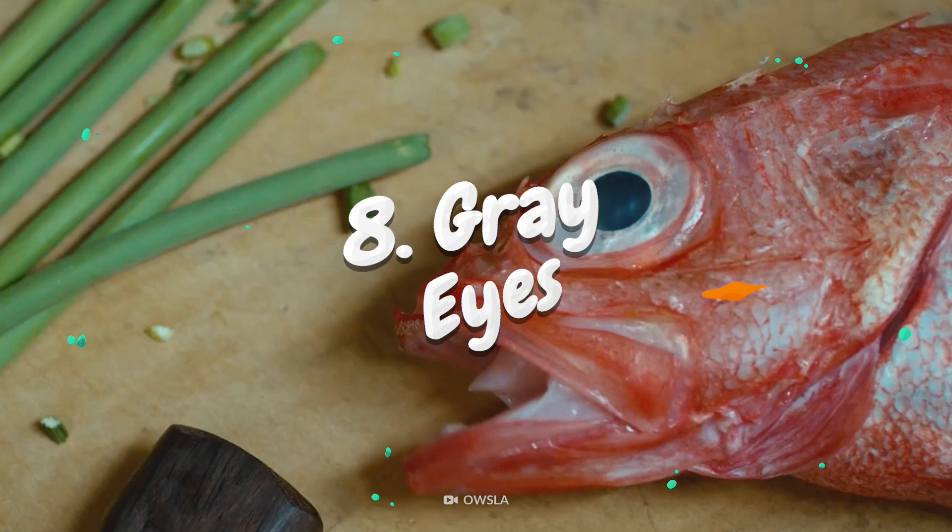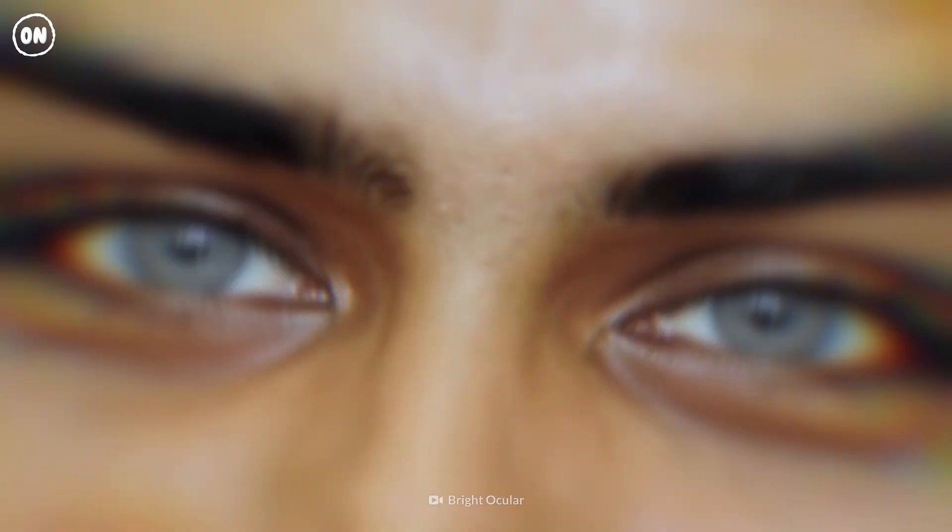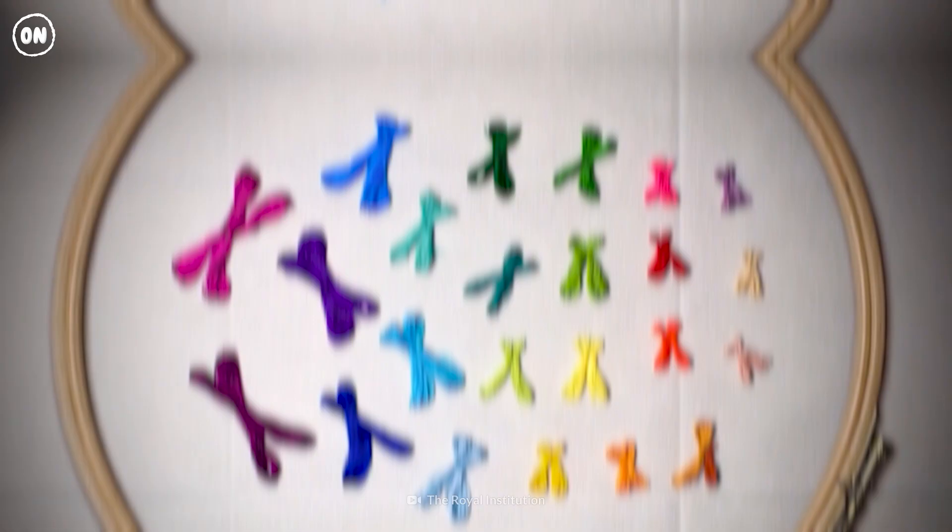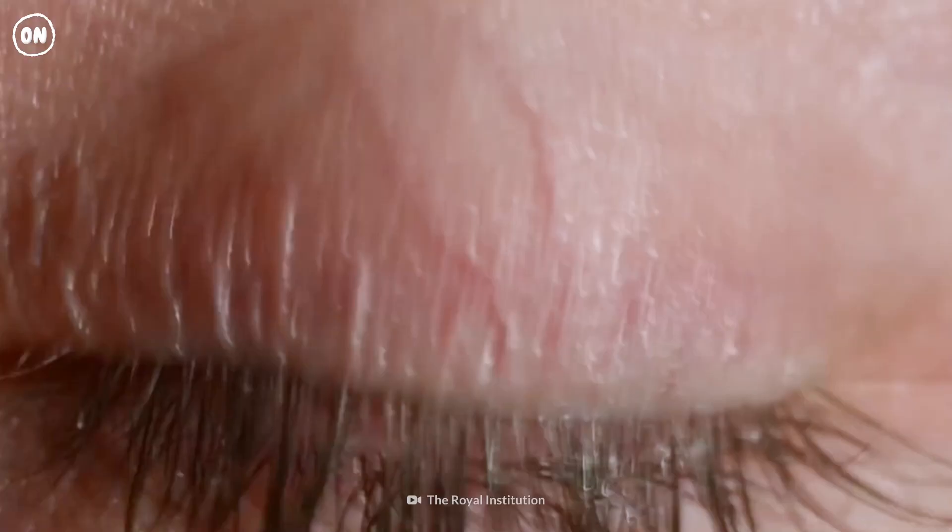Number 8: Gray Eyes. About 3% of the world's population has gray eyes, making it one of the rarest eye colors. Celebrities with this eye color include Pink, Heather Graham, and Clint Eastwood. Your eye color is determined by the amount of melanin in your iris. Dark eyes have more melanin, and light eyes have less.